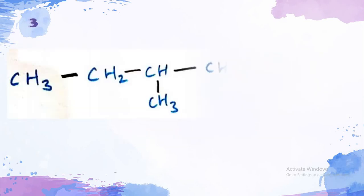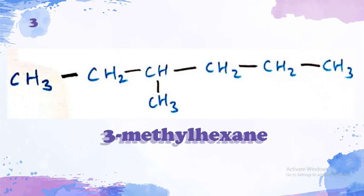Let's go to the third isomer. The third isomer has a methyl branch at the third carbon atom of its main chain which is a hexane. So, it's called 3-methyl hexane.